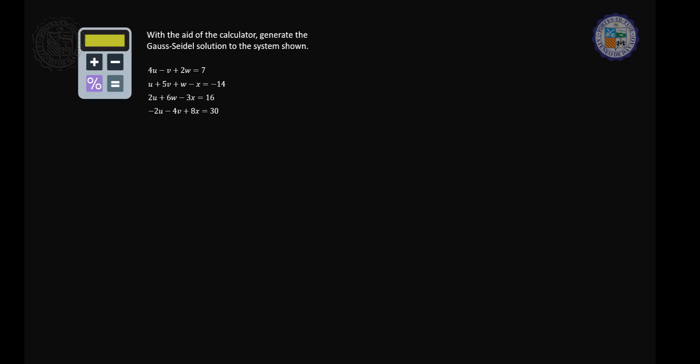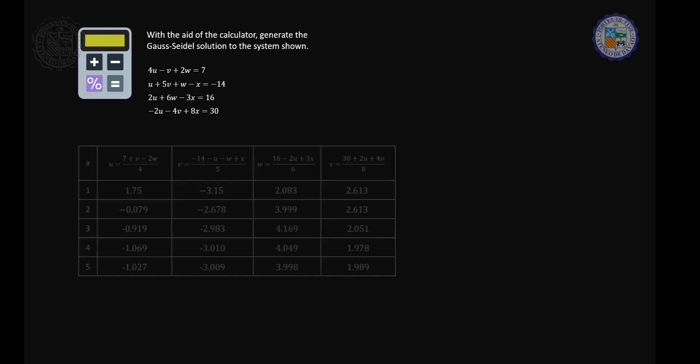The system presented in this calculator exercise is the same as the one presented in the sample problem that involves Gauss-Seidel and Jacobi's method. In that sample problem, we were able to generate this tabular solution and the approximate values in five iterations are the following.